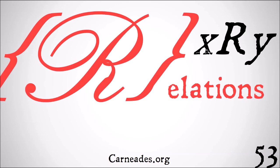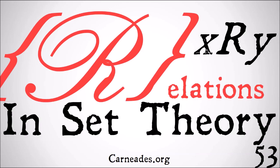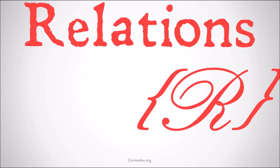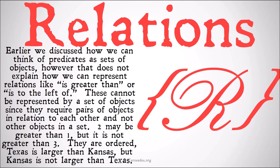Today we are finally moving on from operations to relations in set theory. Earlier we discussed how we can think of predicates as sets of objects. However, that does not explain how we can represent relations like 'is greater than', 'is to the left of', 'is the father of', or 'is next to'. These cannot be represented by a set of objects since they require pairs of objects in relation to each other.